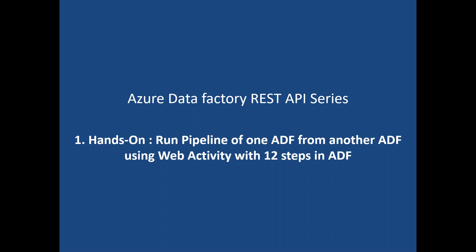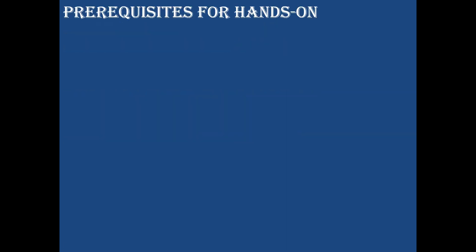Let's get started. In this hands-on lab we will see how to run a pipeline of one ADF from another ADF. We can achieve this using the web activity by following exactly 12 steps in Azure Data Factory.